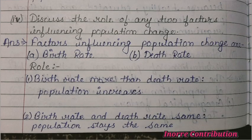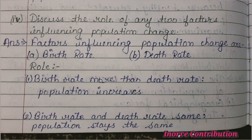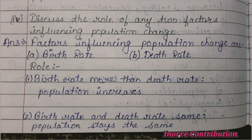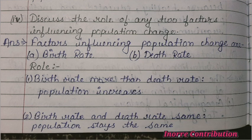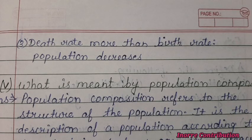Next question: discuss the role of any two factors influencing population change. The factors influencing population change are birth rate and death rate. First, if birth rate is more than death rate, population increases. Second, if birth rate and death rate are the same, population stays the same. Third, if death rate is more than birth rate, population decreases.